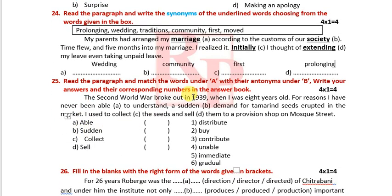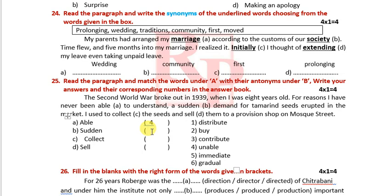Antonyms: 'able' — antonym: unable (number 4). 'Sudden' — antonym: immediate (number 5). 'Collect' — antonyms include: distribute, sell, buy.